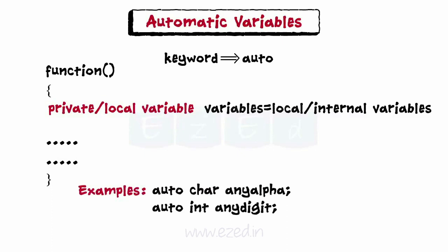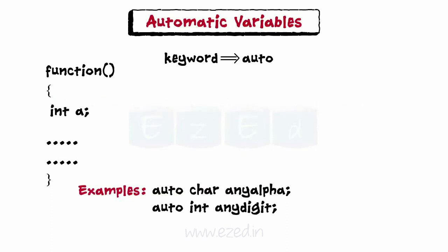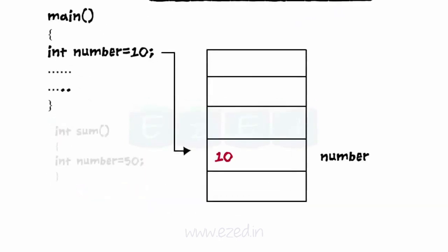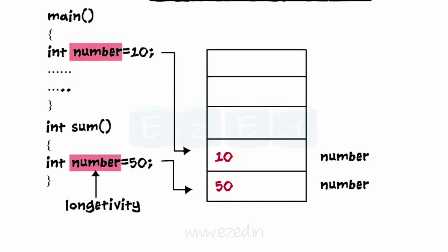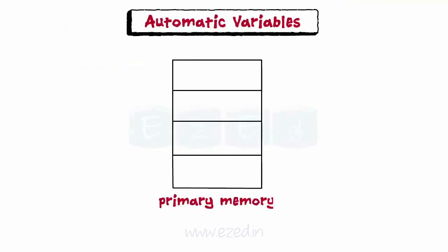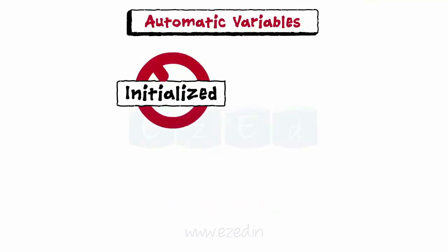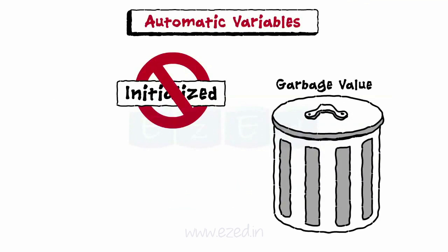Have a look at the examples. A variable declared inside a function without storage class specification is by default an automatic variable. Here the storage class of variable A is automatic by default. An important feature of automatic variables is that their values do not change by reference to them in another function. The scope of the variable is limited only to the block, thus the same variable name can be used in another function. Their scope is limited to the block in which they are declared, and they retain their values until the last line of the block. They are stored in primary memory and if not initialized during declaration, they are assigned a garbage value.